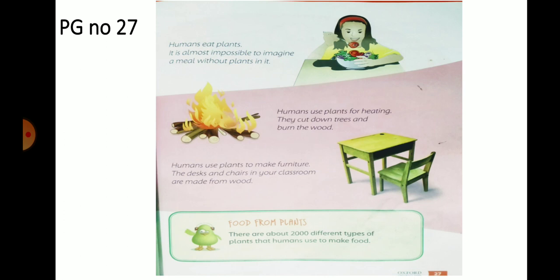Humans use plants to make furniture. Humans plants ko furniture banane ke liye bhi istamal karte hain. The desks and chairs in your classroom are made from wood. Aapki class mein jo chair aur table hain, yeh bhi darahton ki lakdi se hi bantay hain.